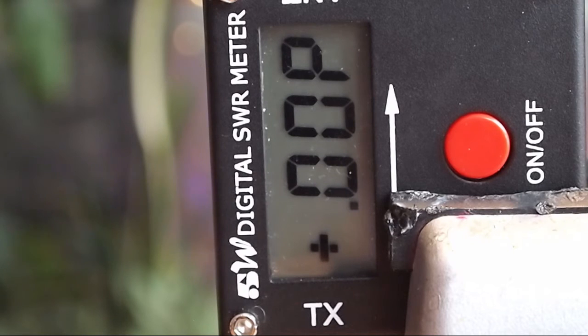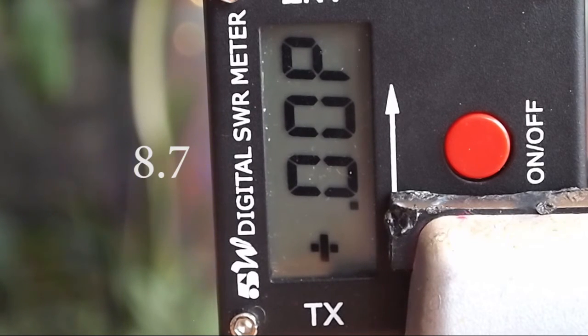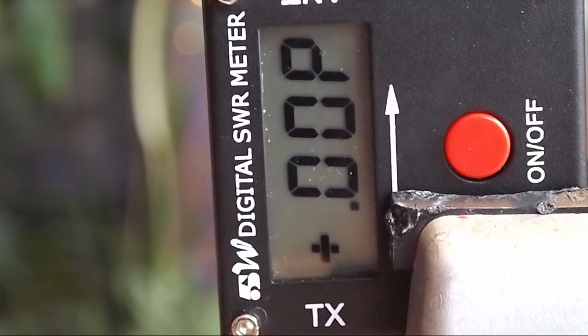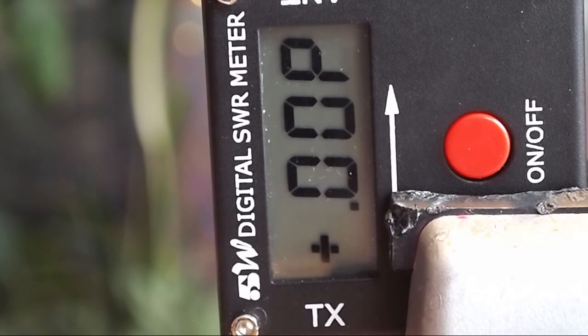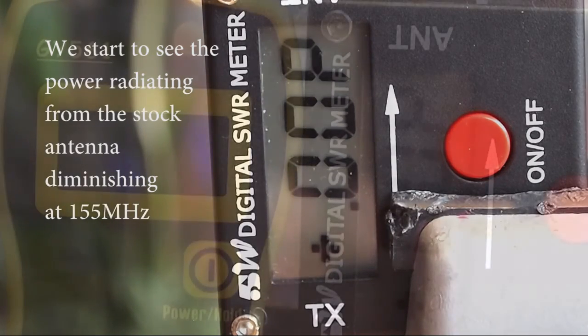Now we're moving on to our forward power and we're going to start out on 145 MHz on low and see what we've got for watts going forward. 3.4 on low. Power high, and 8.7 watts on high. So that's with the stock antenna on 145 MHz. Now move over to 155 MHz. Again 3.5 watts, just a little bit higher. Power high. Now we'll do high power and we get 8 watts forward on high.